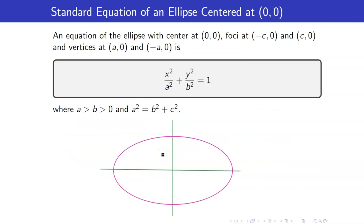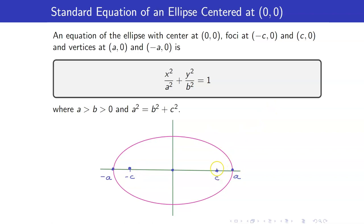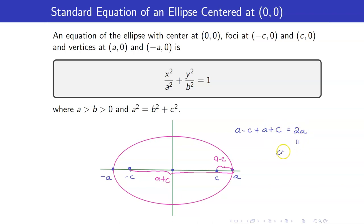Here is the equation of an ellipse with center at (0,0), foci at (-c,0) and (c,0), and vertices at (a,0) and (-a,0). Consider the point (a,0): its distance from the focus (c,0) is a minus c, and its distance from the second focus is a minus (-c), which is a plus c. Therefore the sum of the two distances is a minus c plus a plus c, which equals 2a. This 2a is the common sum of distances from the foci.